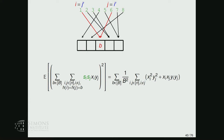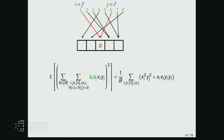We can now rewrite the sum. Before we had a sum over all I and J that hash into bucket B; we rewrite as a sum over all coordinates I and J, adding the constraint that they must hash to the same bucket. I and J both hash to a given bucket with probability 1/B². Taking expectation over the hash function gives a 1/B² factor. Since we also sum over B buckets, we cancel one B.